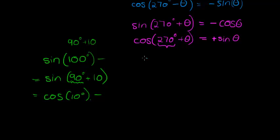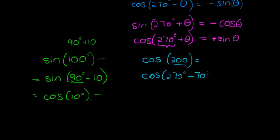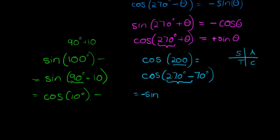Let's look at one more: cos of 200 degrees. Since 200 is more than 180 and less than 270, it is in the third quadrant. To write it in terms of sine, I write it as cos of 270 degrees minus 70 degrees. We are referring to the y-axis, not the x-axis, so we use the co-ratio of cos, which is sine. But in the third quadrant cos is negative, so we also have a negative: negative sine of 70 degrees.